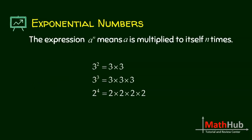Exponential numbers. The expression a to the n means you multiply a to itself n times. So for example, 3 squared is actually 3 times 3. You multiply 3 with itself twice. 3 cubed means you multiply 3 with itself 3 times. 2 raised to 4, you multiply 2 with itself 4 times.